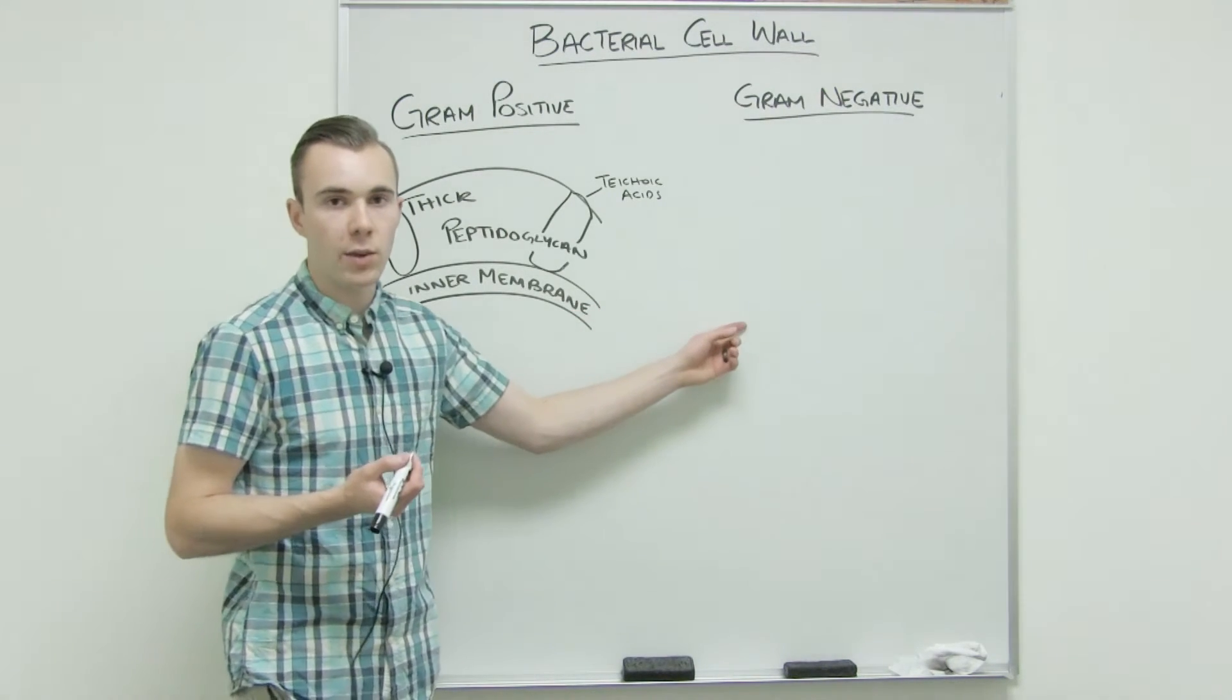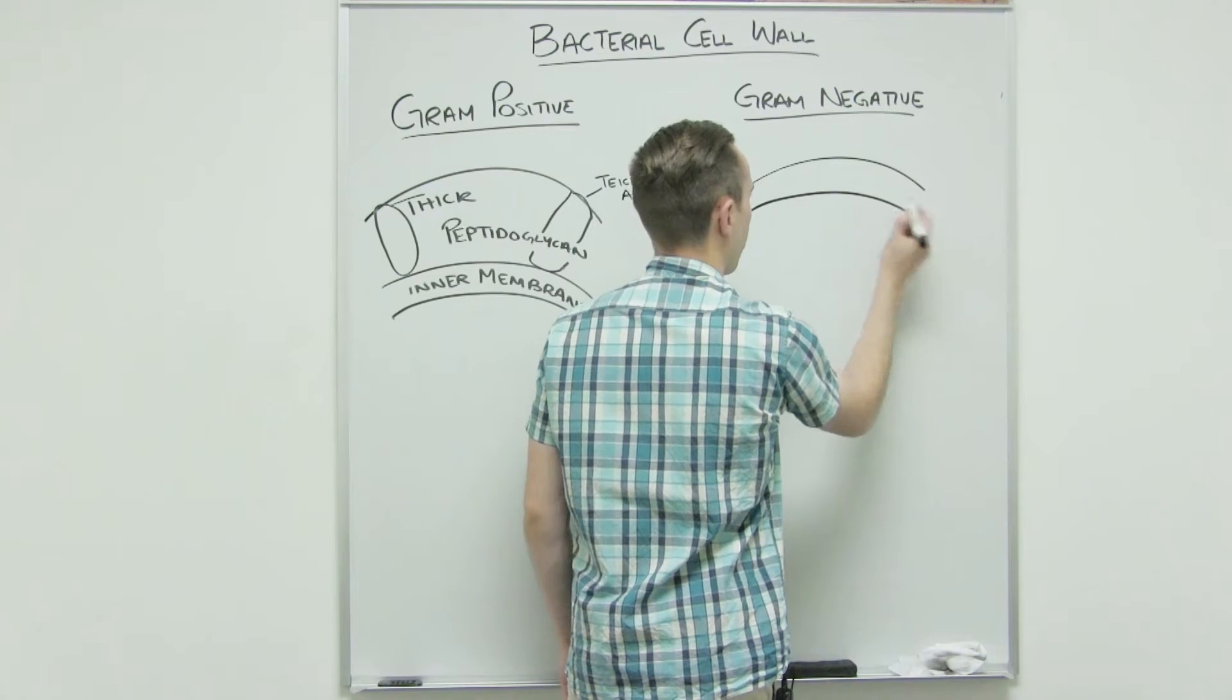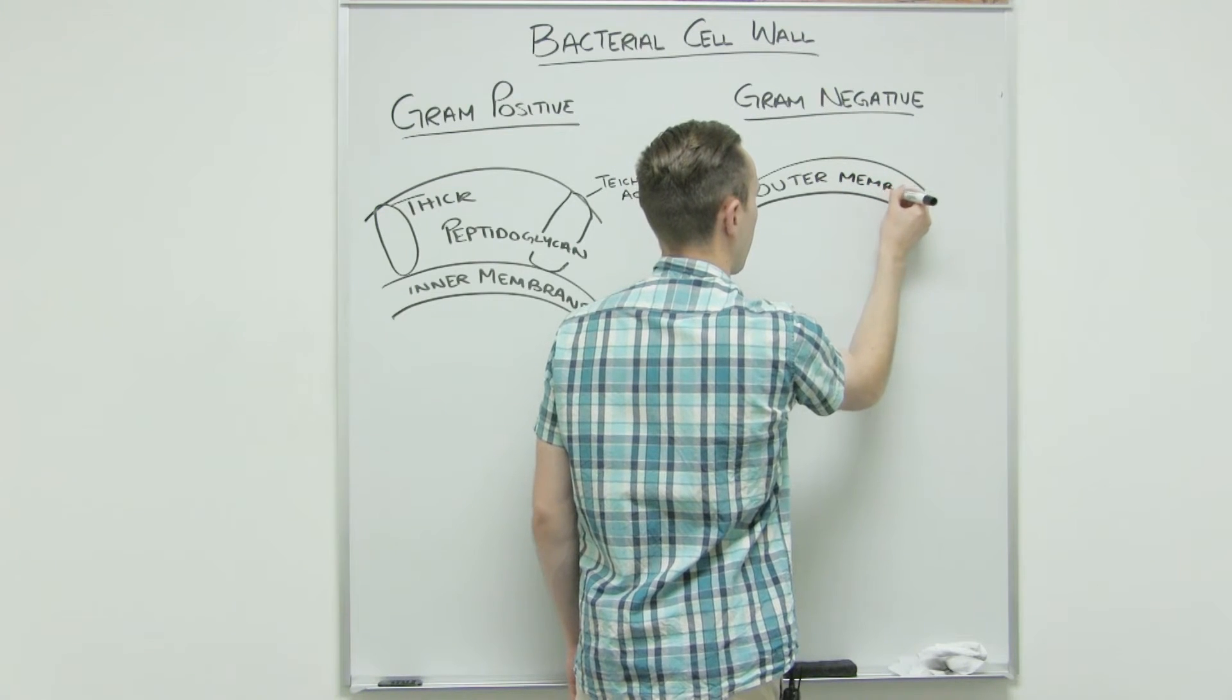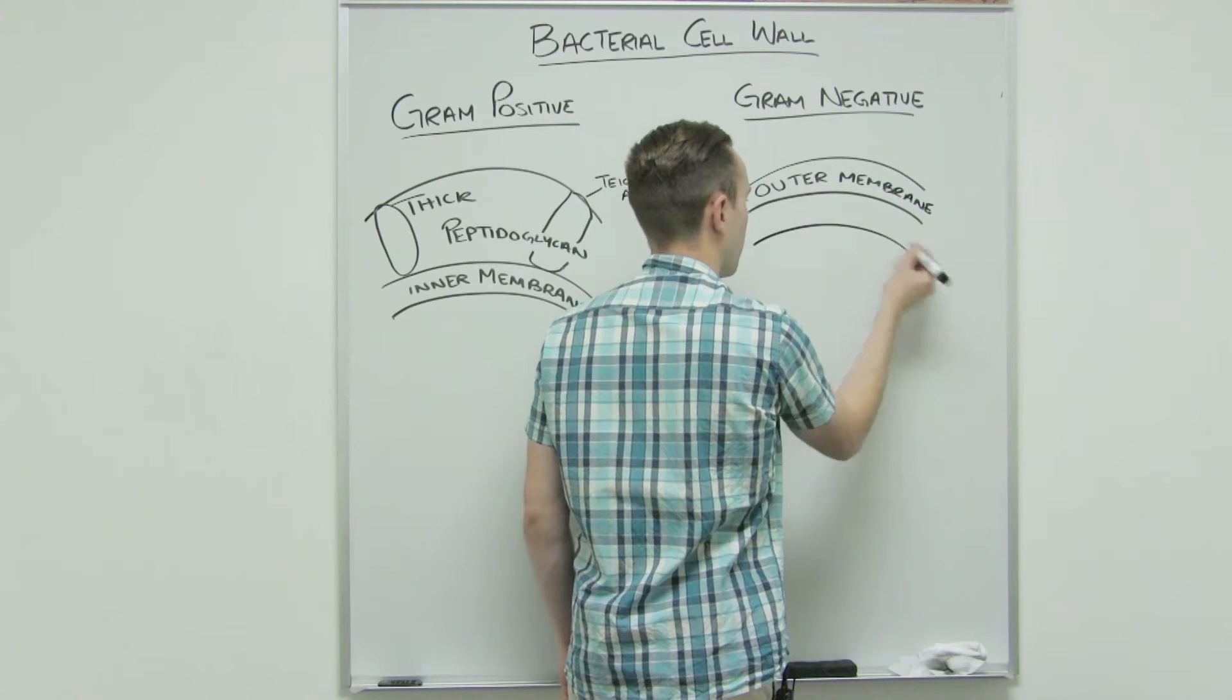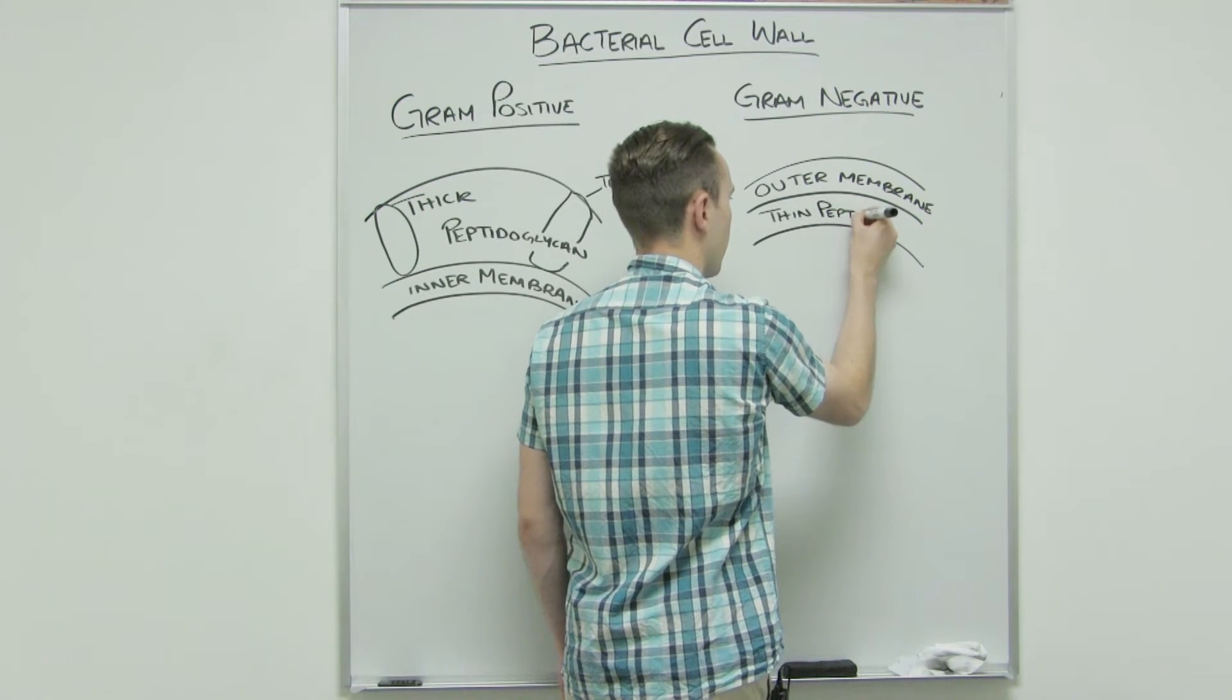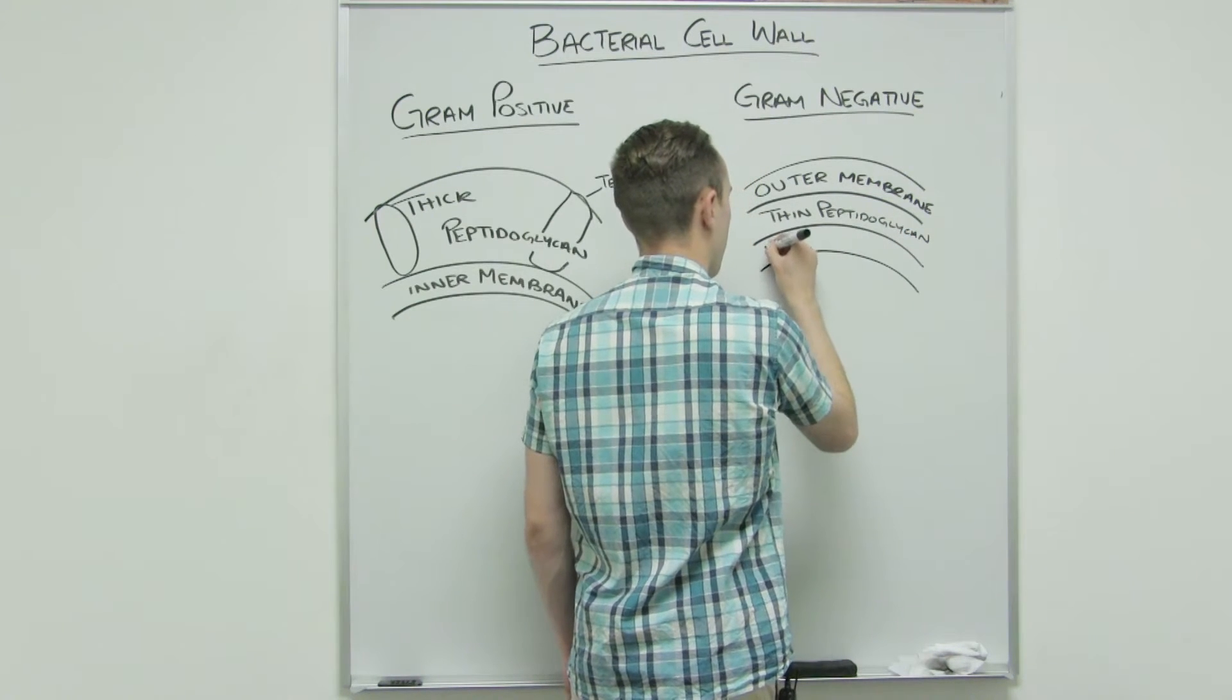The gram-negative cell wall has an outer membrane. We're going to have a thin layer of peptidoglycan, or in other words, it has few layers. And then there's an inner membrane.